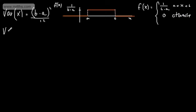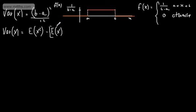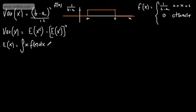Considering Var(X), we can write Var(X) = E[X²] minus (E[X])². The expected value of X is the integral of x times f(x) dx, and the expected value of X² is the integral of x² times f(x) dx.